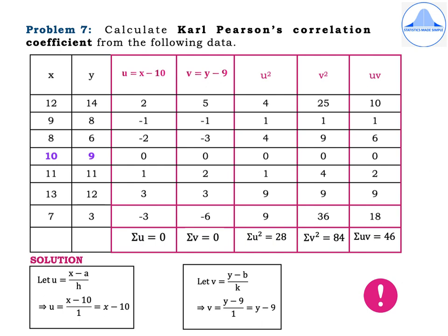Finding u equal to x minus 10: for x equals 12 we get 2; for x equals 9 we get minus 1; continuing we get minus 2, 0, 1, 3, minus 3. Summation u equals 0. Similarly, v equals y minus 9 gives: 5, minus 1, minus 3, 0, 2, 3, minus 6. Summation v also equals 0. For u-squared: 4, 1, 4, 0, 1, 9, 9 — summation u-squared equals 28.